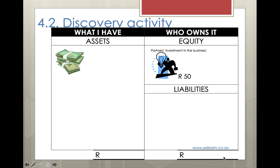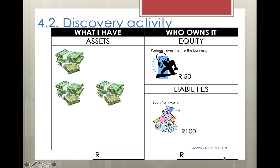You look at your 50 Rand and realise that's not going to buy you very much, so you manage to convince your mom to lend you some money. She does want you to pay interest but that will only happen later. When you get the money from your mom you're going to get 200 Rand in your assets and 100 Rand in your liabilities as a loan from your mom. If you look at the totals you can see you've got 150 in assets and a total of 150 of equity and liabilities together.